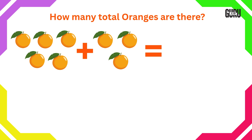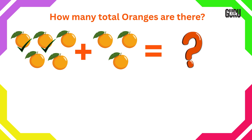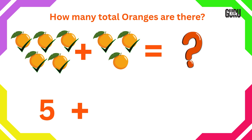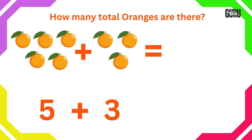How many total oranges are there? Here we have to do addition. Let's count. 1, 2, 3, 4, 5 and 1, 2, 3. Now let's count all together. Count after 5.